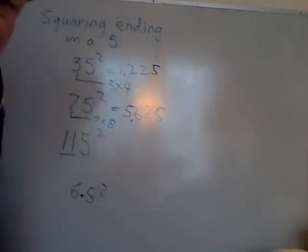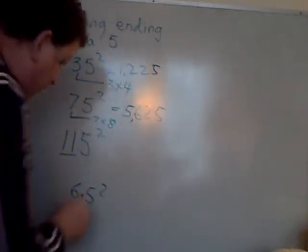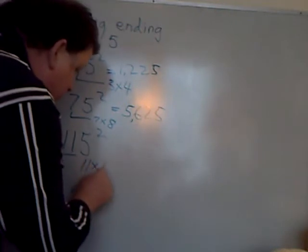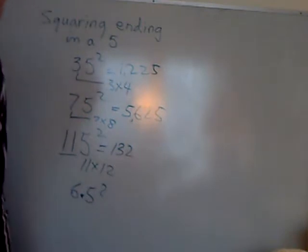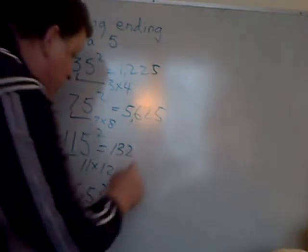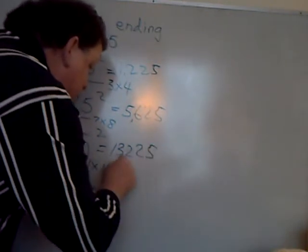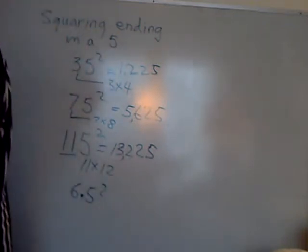If there's two digits, treat it as 11. So do 11 times 12. That gives you 132. 12 is the next highest number. Then attach 25 to it. 13,225.